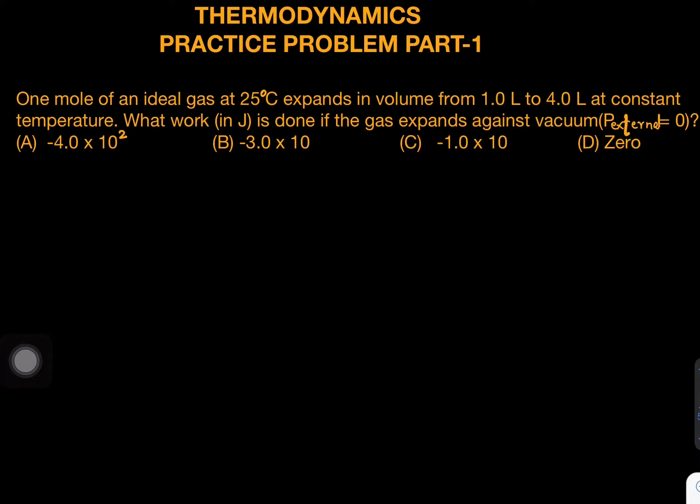The question is: 1 mole of an ideal gas at 25 degree Celsius expands in volume from 1 litre to 4 litre at constant temperature. So T is constant. You are taking volume from 1 litre to 4 litre. That's the increase in volume that you can see in this question.